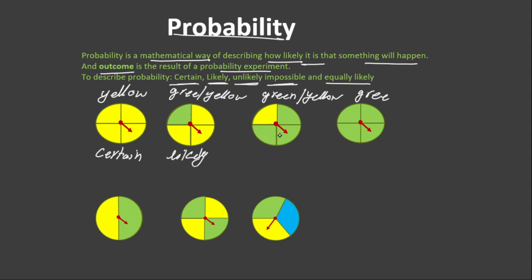The probability of the arrow landing on yellow in the third spinner is unlikely, because out of the four equal pieces of the spinner, only one of them is yellow. The probability of the arrow landing on yellow in the fourth spinner is impossible, because there is no yellow color in this spinner. So there is no chance for the arrow to land on yellow.